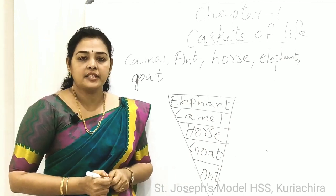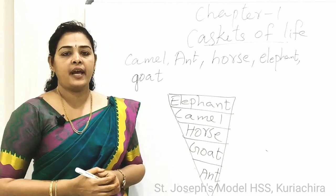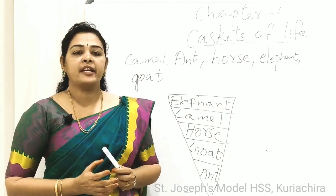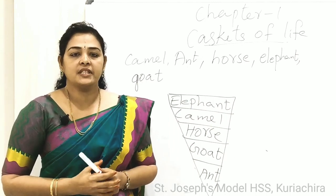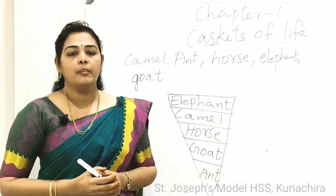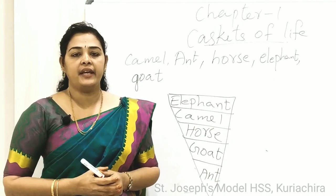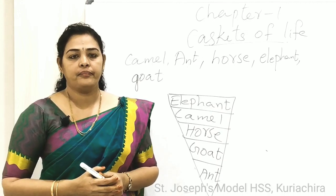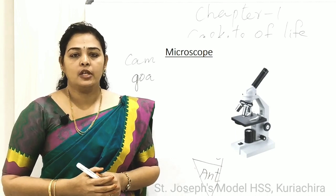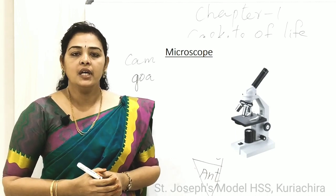Are there any organisms smaller than ant? Yes, there are some organisms smaller than ant. They are called microorganisms. These microorganisms cannot be seen by the naked eye; they can be observed only through the microscope. Microorganisms are present in air, water and soil. A microscope is an instrument used to see objects which we cannot see with our naked eye.